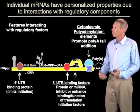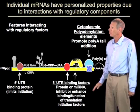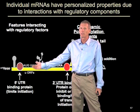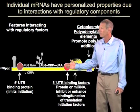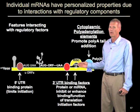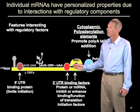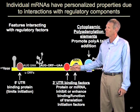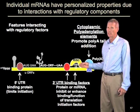Layered on top of those intrinsic differences are regulatory components targeted to specific mRNAs. For example, mRNAs can have proteins which bind to their 5' UTR, which can block the scanning of ribosomes and therefore block initiation. Similarly, at the 3' UTR, we can have either RNA binding proteins or microRNAs — small RNAs which recognize specific sequences — and deliver a so-called RISC, or RNA-induced silencing complex, to the message. These complexes, either protein or microRNA derived, can inhibit or enhance the function of various translation initiation factors.